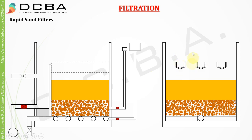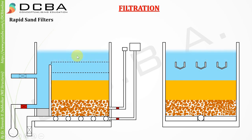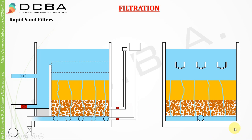There are troughs provided above the filter. During filtration, water comes in and fills the filter. The water trickles down through the sand media, gets collected into the laterals, then into the manifold, and finally the filtered water is collected outside. This is the general process of filtration in rapid sand filters.